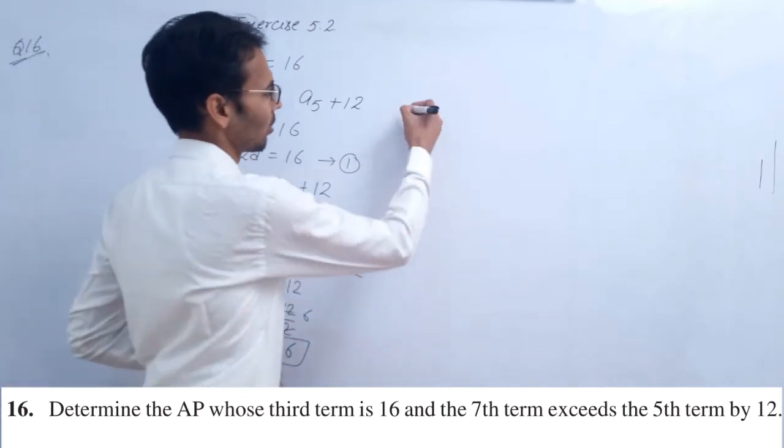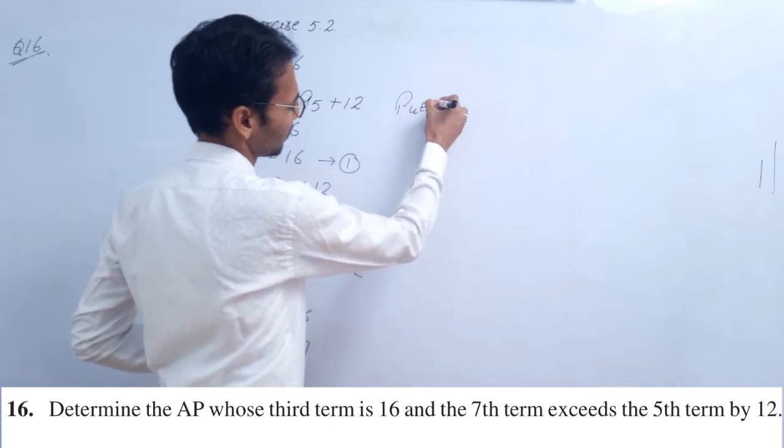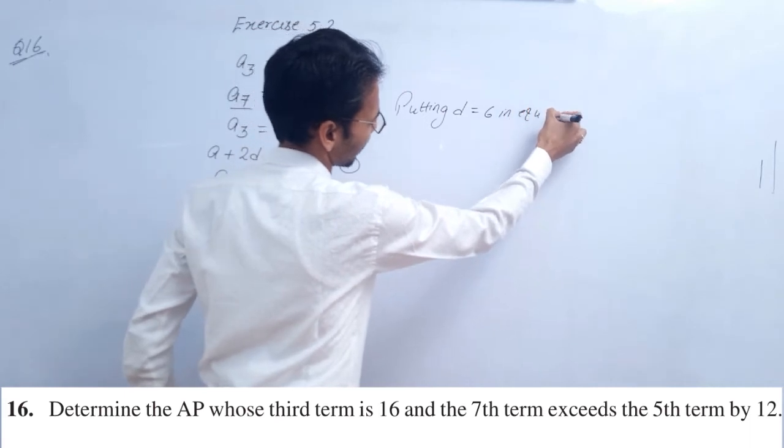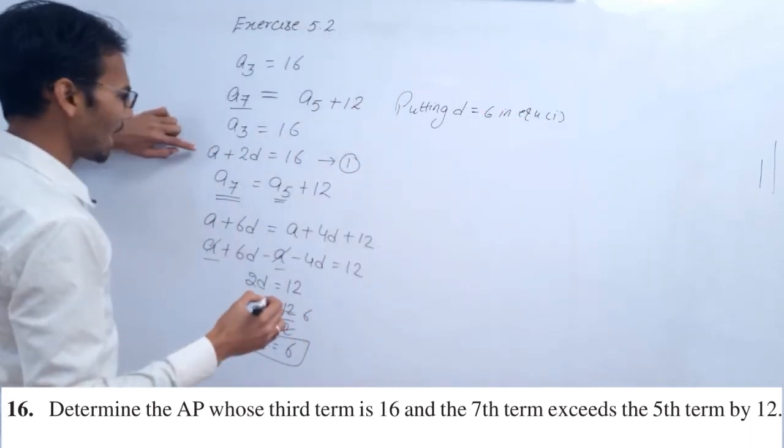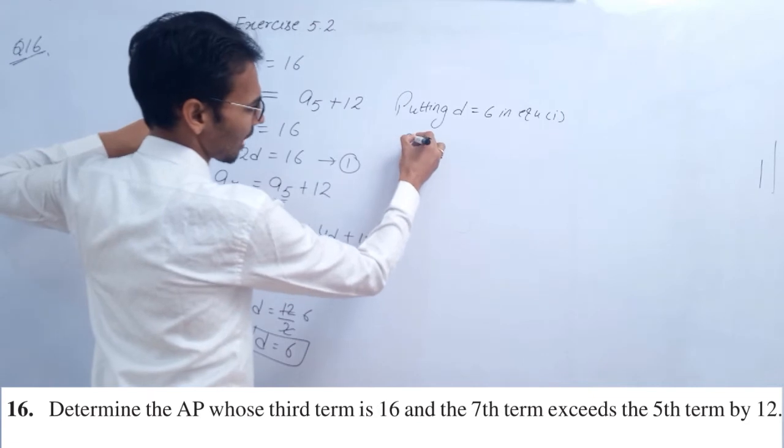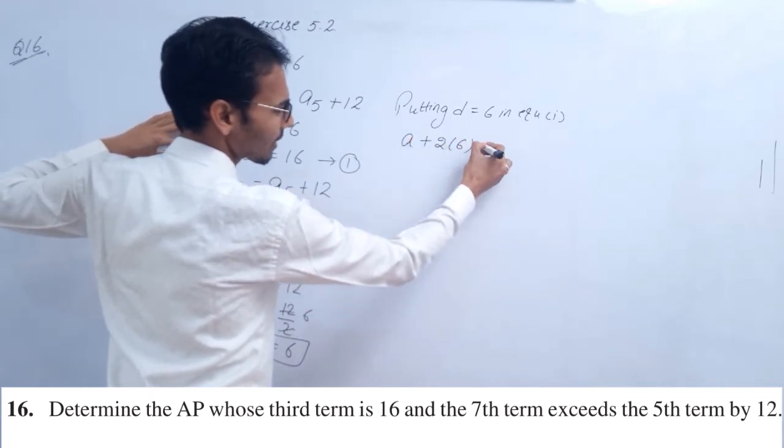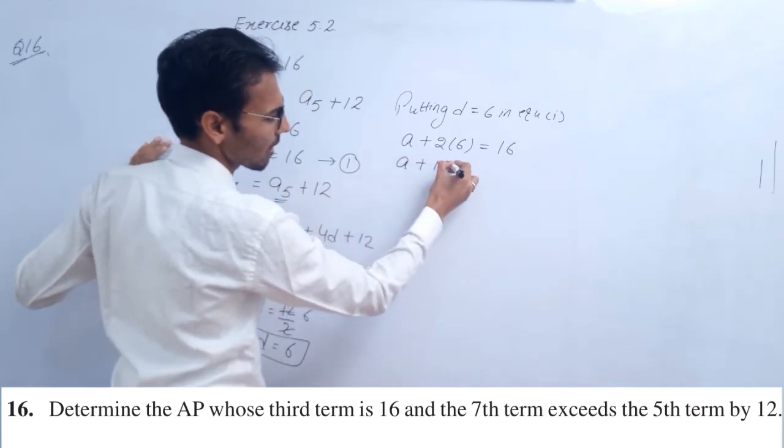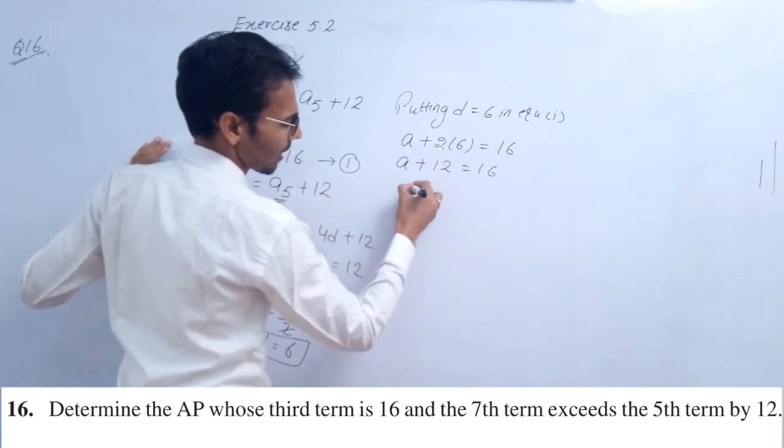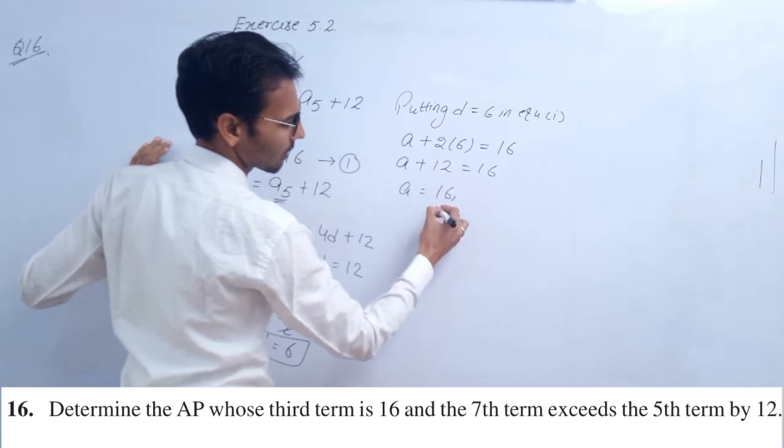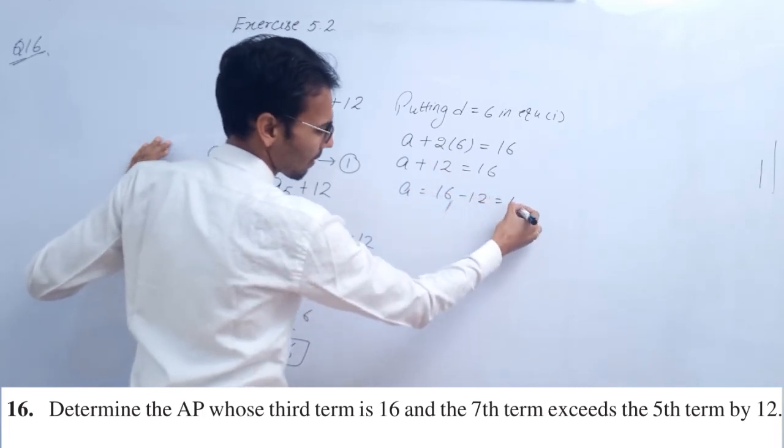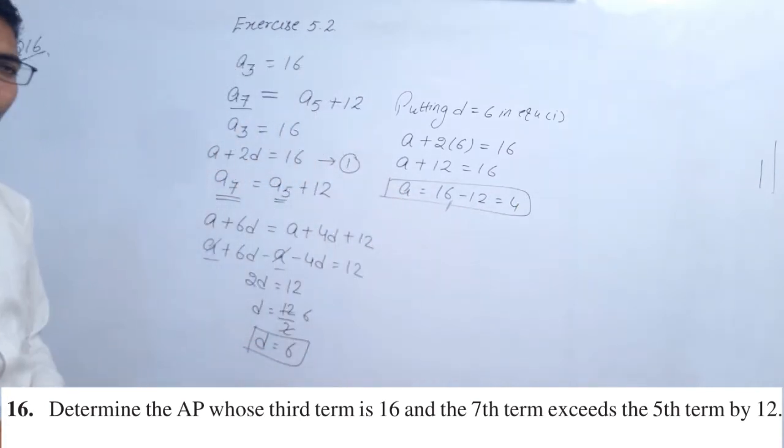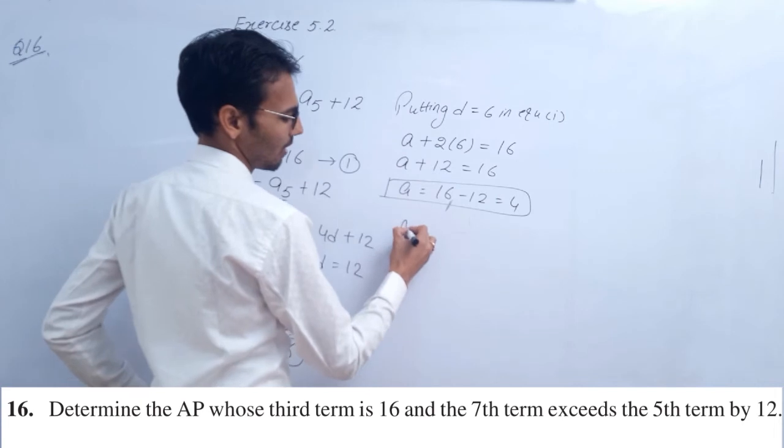Putting d equals 6 in equation first: a plus 2d, a plus 2 times 6, which is 12, equals 16. Simplifying, a plus 12 equals 16, so a equals 16 minus 12, which is 4.